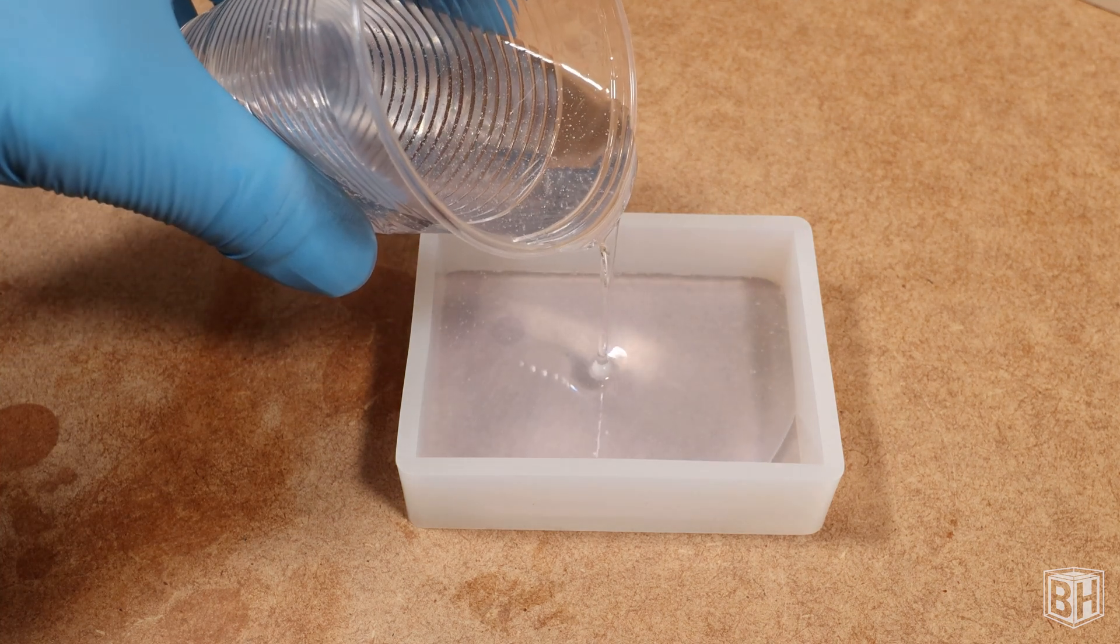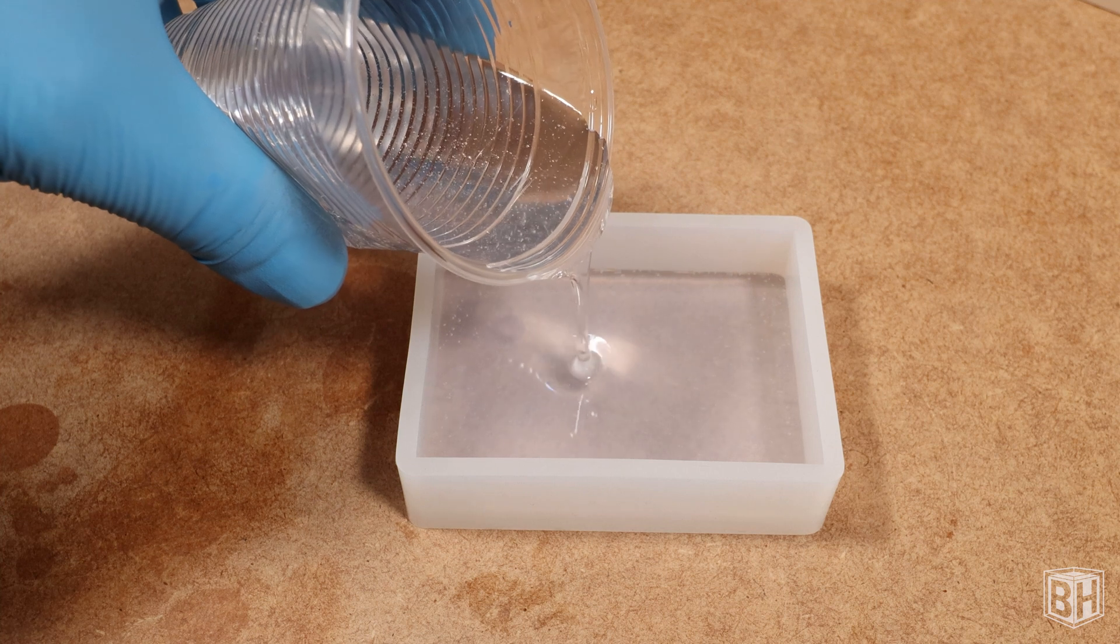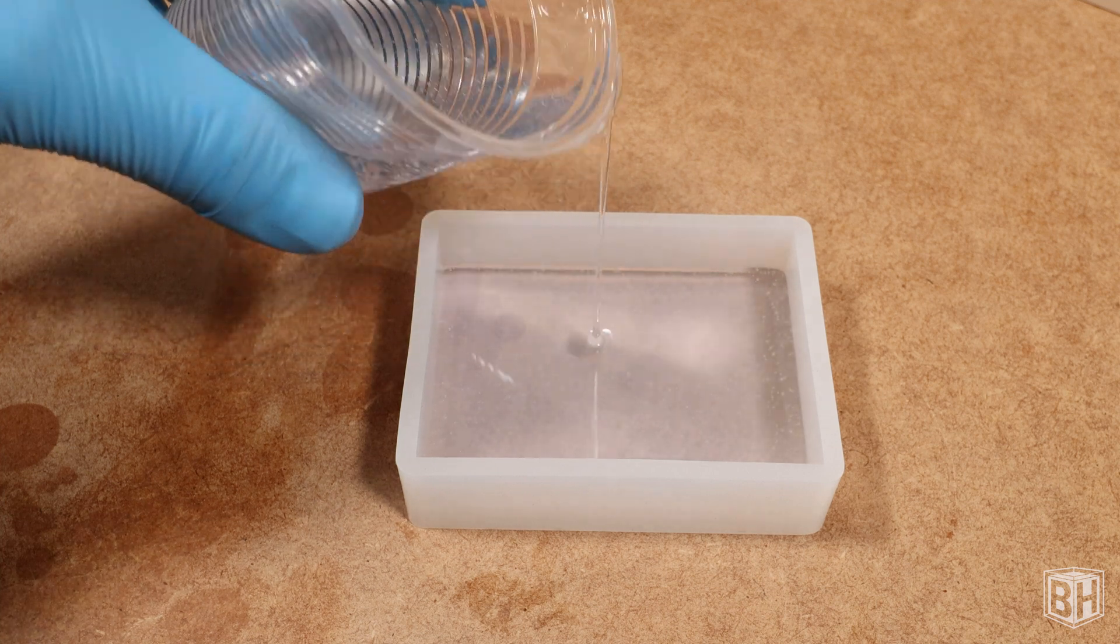First, I'm going to pour a base layer of resin and let that harden. I'm using polyester resin which I mixed off camera.